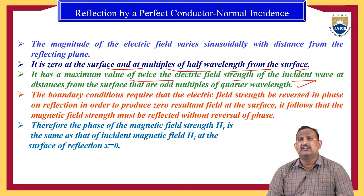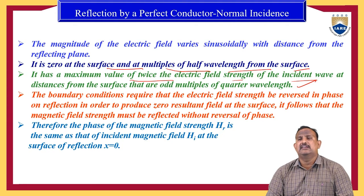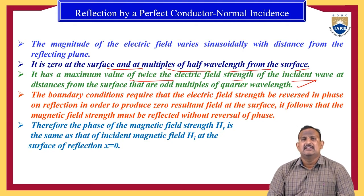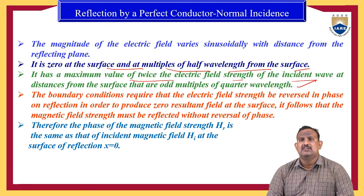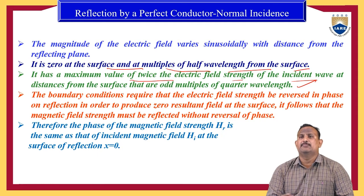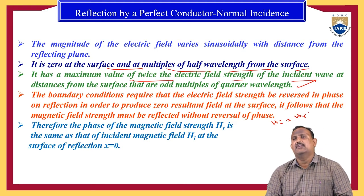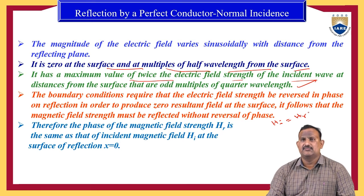The boundary conditions require that the electric field strength be reversed in phase on reflection, in order to produce a 0 resultant field at the surface. It follows that the magnetic field strength must be reflected without reversal of phase, whereas the electric field undergoes phase reversal. This is the basic difference between the electric and magnetic fields. Therefore, H_i = H_r at the surface.